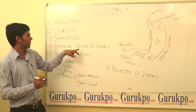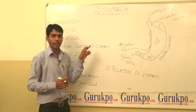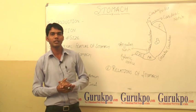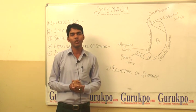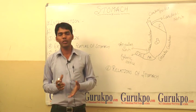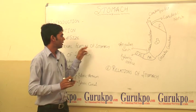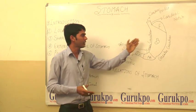Next are the external features of the stomach. The stomach has 2 orifices: the cardiac orifice and the pyloric orifice. The stomach also has two surfaces: one anterior surface and one posterior surface.